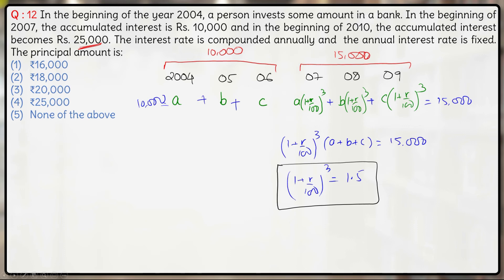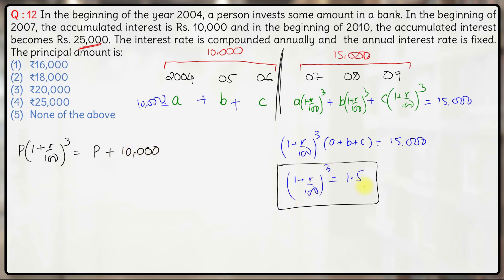Now we need to find the principal. The amount after three years is P × (1 + r/100)³, which equals the initial principal plus the total interest of ₹10,000. We know (1 + r/100)³ = 1.5, so this becomes 1.5P = P + 10,000. Solving this, P comes out to be ₹20,000.